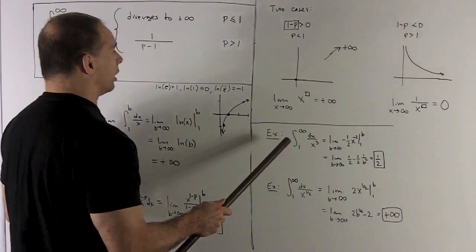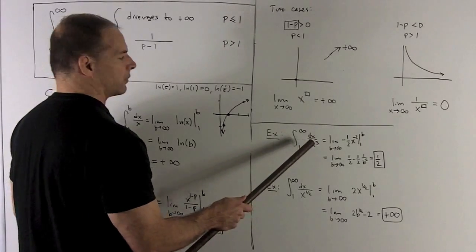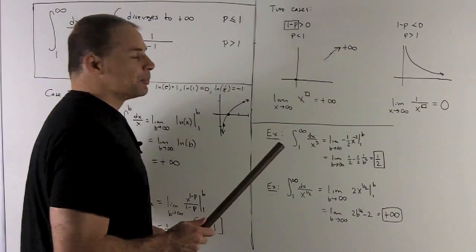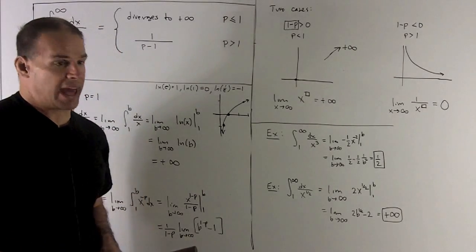So my p here is equal to 3. Right. It's 3. So that's bigger than 1, and we see that this is going to converge to a half.